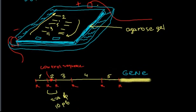DNA overall is charged negatively, so when we run gel, DNA goes from the negative side to the positive charge.